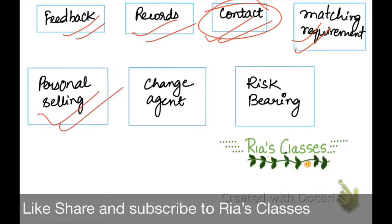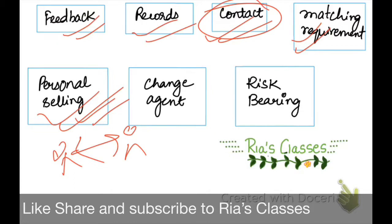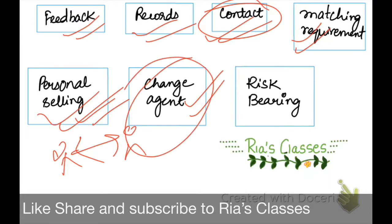Next is Personal Selling. Since the producer is quite far away, the distribution channel bridges the gap between the producer and the consumer, offering personal selling directly to the consumer. Another function the distribution channel plays is that of a Change Agent. When new technologies emerge, the distribution channel plays the role of a change agent, helping customers adapt.